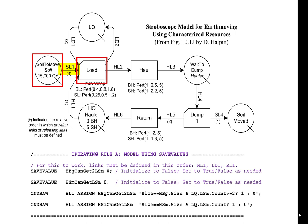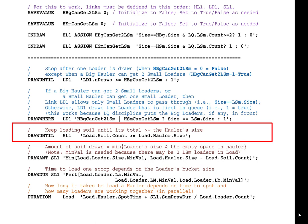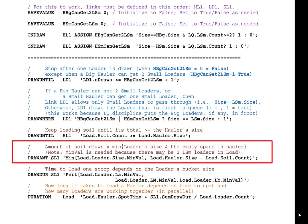It is important to remember that when drawing through link SL1 begins, the new instance of activity load already contains a hauler and one or more loaders. The draw until expression for link SL1 allows drawing to continue until the count of soil in load is >= the size of the hauler in load. The draw amount for link SL1 ensures the amount of soil drawn is the minimum between the loader size and the empty space in the hauler, so the hauler will not be overfilled.